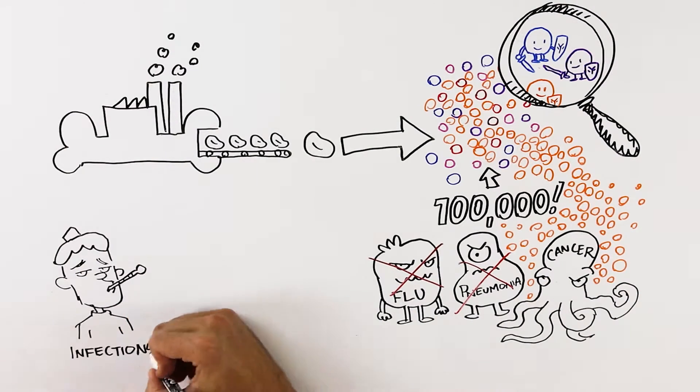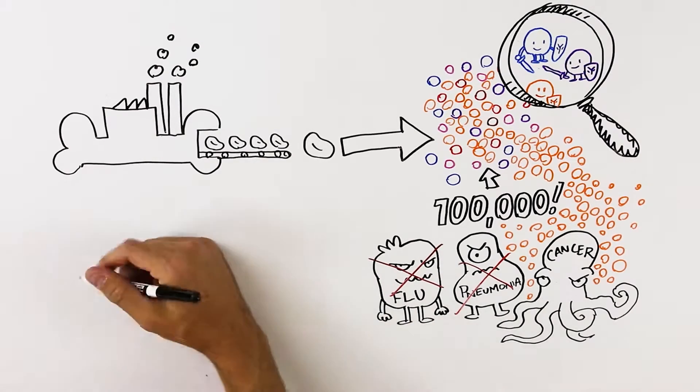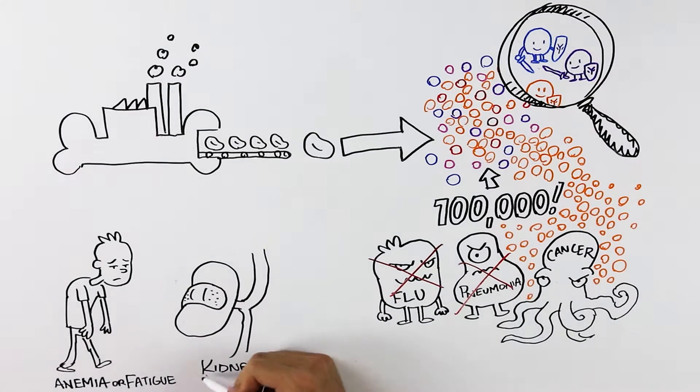This can cause frequent infections, a buildup in bone leading to bone pain and fractures, anemia which causes fatigue, and kidney failure because high levels of protein are in the blood and urine.